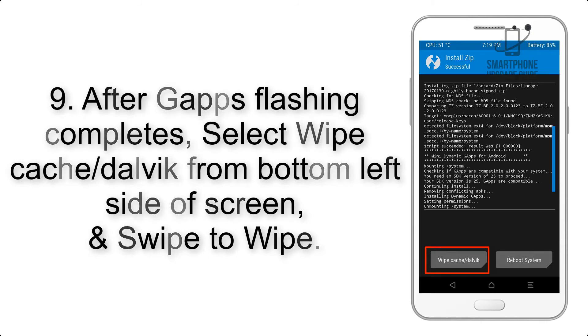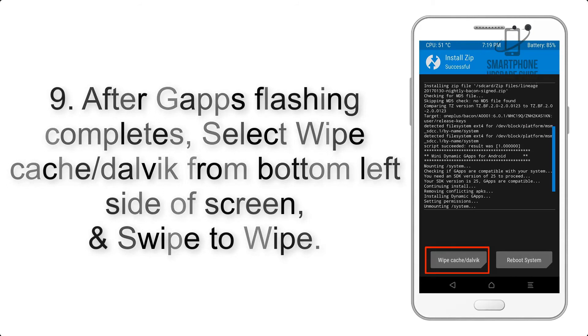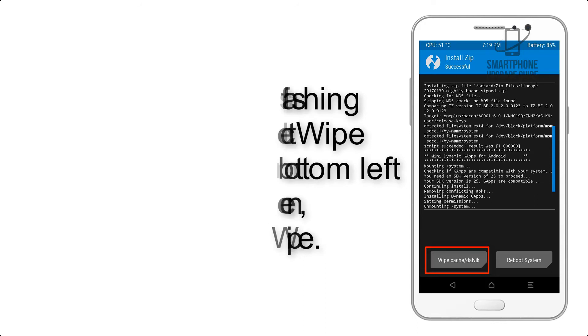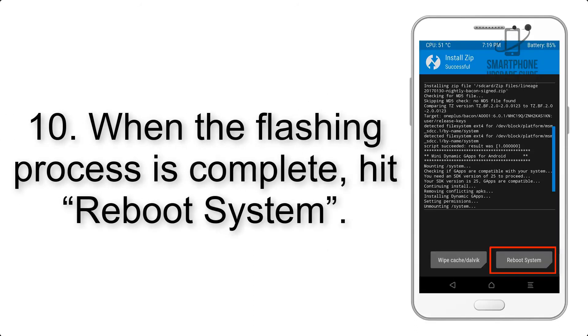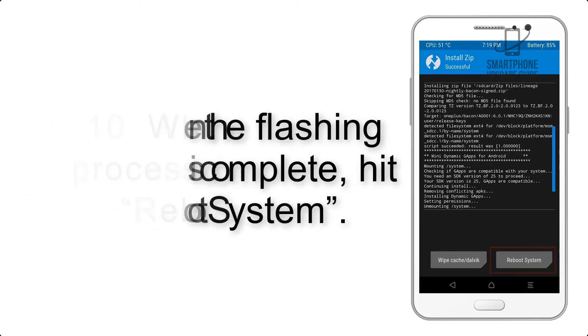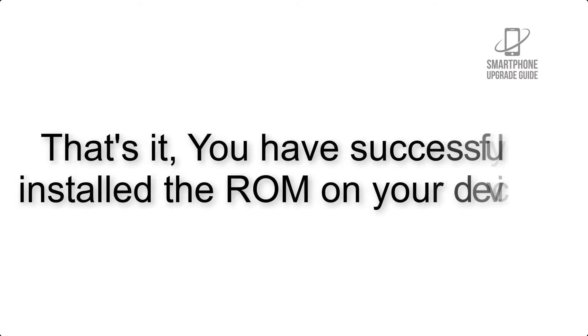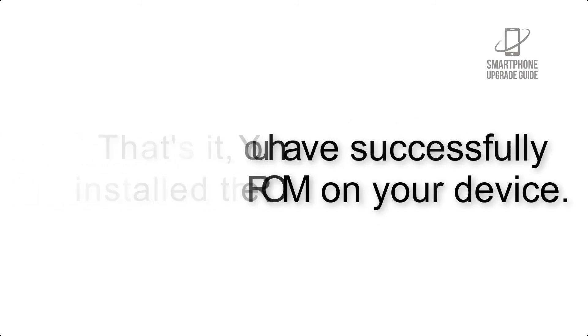Step 9: After GApps flashing completes, select Wipe Cache and Dalvik from the bottom left side of the screen and swipe to wipe. Step 10: When the flashing process is complete, hit Reboot System. That's it — you have successfully installed the ROM on your device.